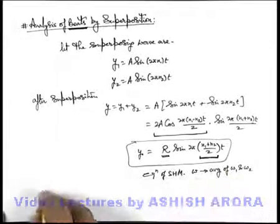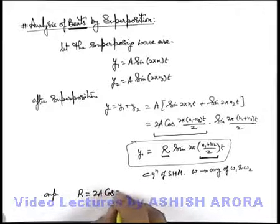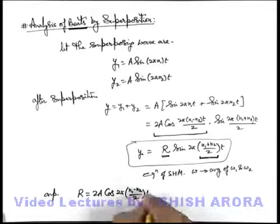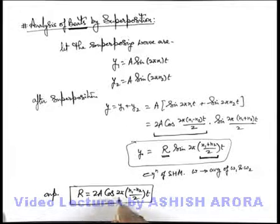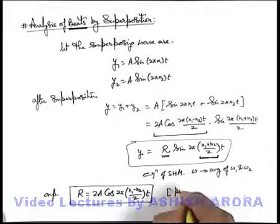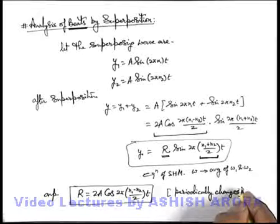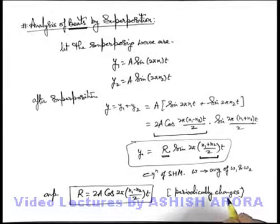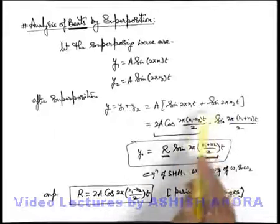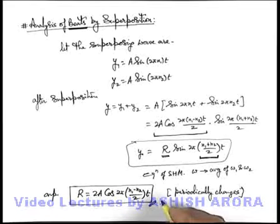The amplitude of oscillation R is written as 2A cos of 2π (n1 minus n2) by 2 times t. Here you can see R is varying periodically with time because it depends on a sinusoidal function, so it is repeating itself after a period of time. This periodically changes, which we already discussed theoretically in the definition of beats — beats are basically the phenomena of sound produced by superposition of two slightly different frequencies when the amplitude of oscillation varies periodically — and here we are getting the same result mathematically.